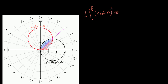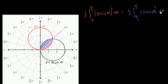Then this blue region right over here is going to be one half times the definite integral from pi over four to pi over two of three cosine theta squared, d theta. As we go from pi over four to pi over two, we're bounded by the black circle, R equals three cosine theta. One thing that might jump out is that these two circles are symmetric around the line theta equals pi over four, so these are going to be the same areas.